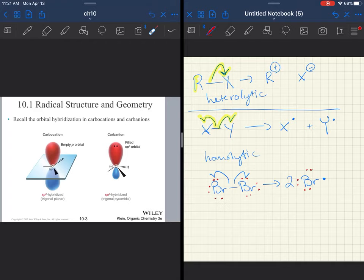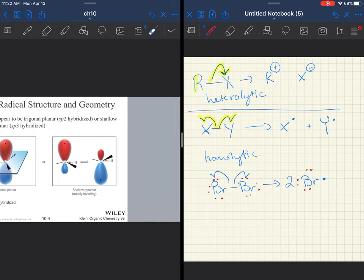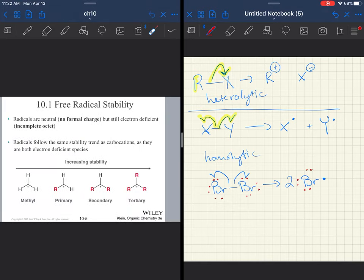Absolutely, there are lone pairs that are present, and I'm going to show them here in red, but when we are focused on the radicals, sometimes the lone pairs are left off, just because that's not what we're focused on. It's not wrong to draw them. You absolutely can, but I don't want you to think that they're not there. It's just that if we're focused on that radical, sometimes that's all we show.